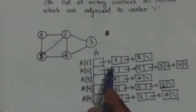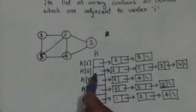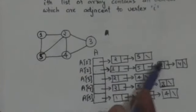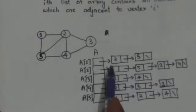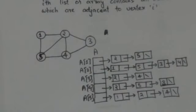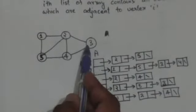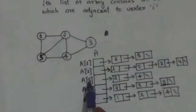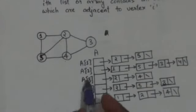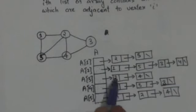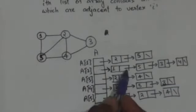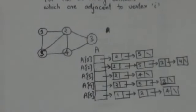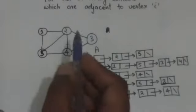A2, that is the second element of array A, represents the linked list of vertices adjacent to vertex 2, and this linked list will contain 1, 3, and 5. A3, that is the third element of array A — see vertex 3: vertices 2 and 4 are adjacent to vertex 3. So A3 represents the linked list of vertices adjacent to vertex 3, and this linked list will contain vertices 2 and 4.